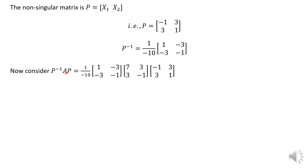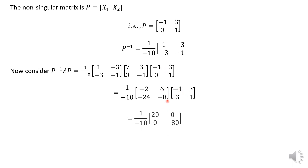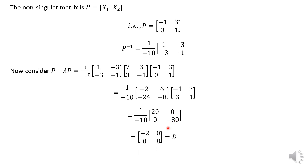Now compute P inverse A P. Multiplying P inverse by A first, then by P, we get (1/-10) times [[20, 0], [0, -80]]. Dividing each element by -10: 20 / -10 = -2 and -80 / -10 = 8. So P inverse A P equals the diagonal matrix D = [[-2, 0], [0, 8]], where the diagonal entries -2 and 8 are the eigenvalues.